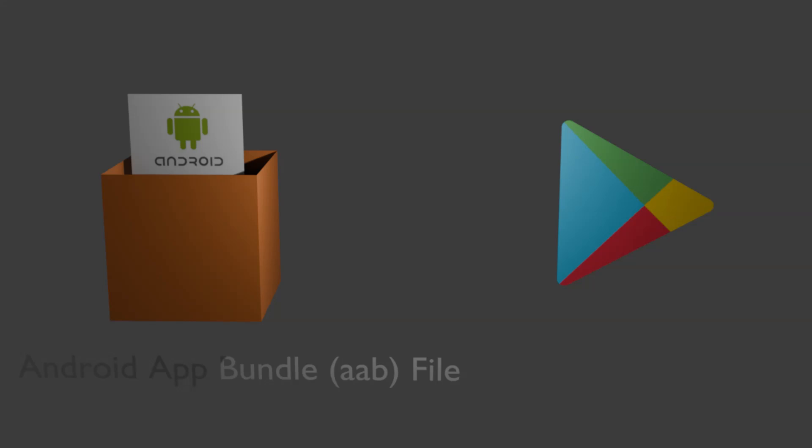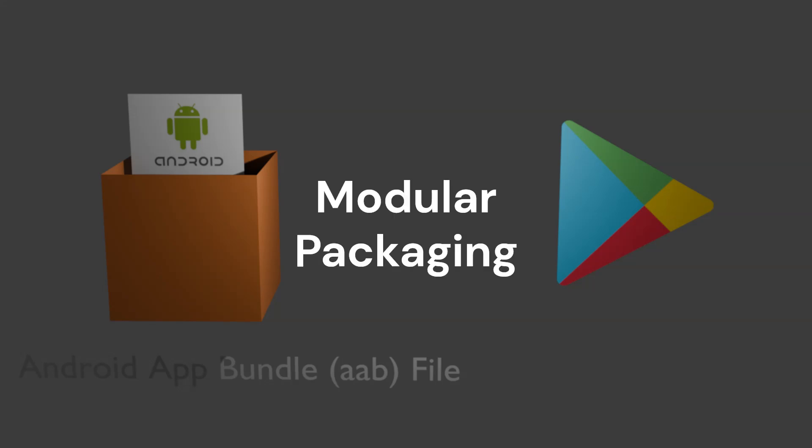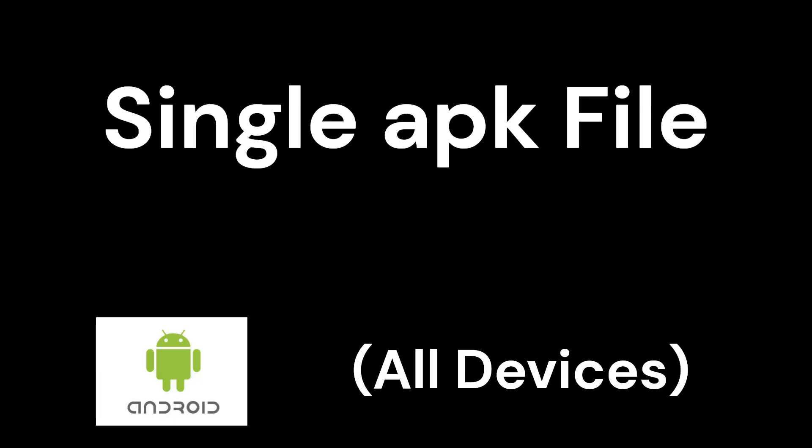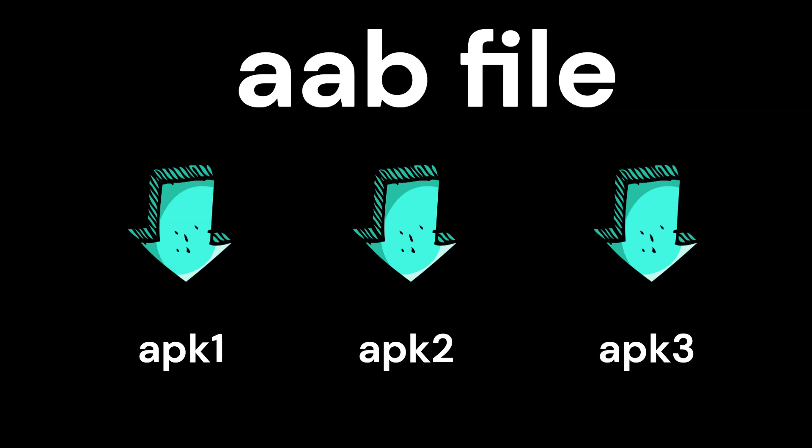First, what are Android App Bundles? Android App Bundles, called AAB, are the official publishing format for Android applications on Google Play. Unlike the traditional APK format, App Bundles allow developers to package their apps in a more modular way. Instead of creating a single APK that includes all possible device configurations, App Bundles enable Google Play to generate optimized APKs tailored to each user's device.